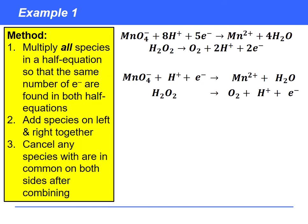So let's begin with this example. And the key to this method is understanding that we must have the same number of electrons in both half equations.